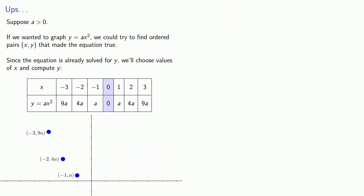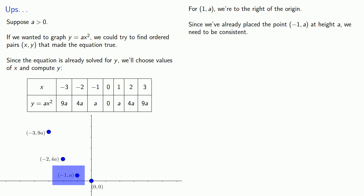Well zero, zero, we know exactly where that is. For one a, we know we're to the right of the origin. And since we've already placed the point minus one a at height a, we need to be consistent. This point has to be at the same height as this point. Which means we'll want to put the point about here.